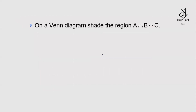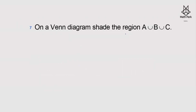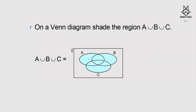On a Venn diagram with three sets, shade A∩B∩C. This is the overlap of all three sets — the region common to all three. For A∪B∪C, it is the entire region covered by all three sets — everything included in A, B, and C.